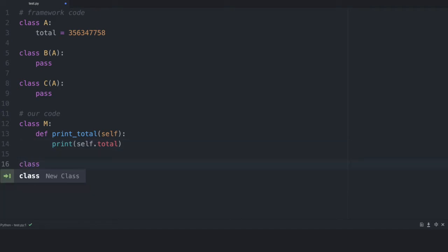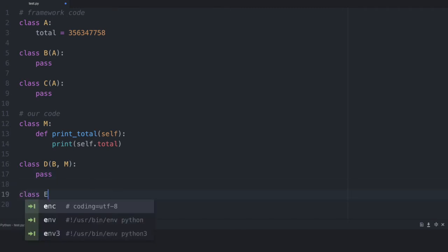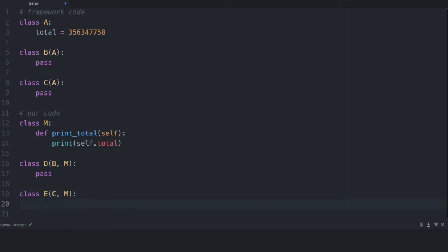We create another class D which inherits from B and from M and we are going to pass here. We need to create a last class, class E which inherits from C and our mixin M and I'm also going to pass here. This is our class structure.